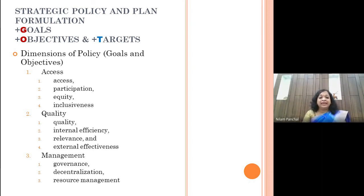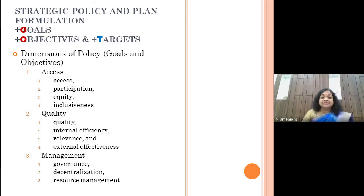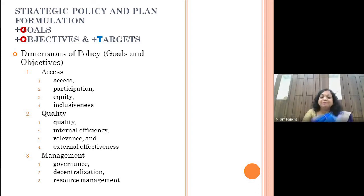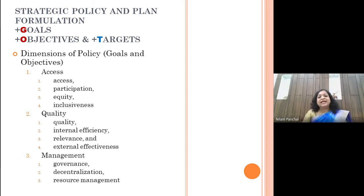So when we are saying strategy, policy and plan formulation, we need to look into these three things. For example, when UGC and HRDC implemented the online orientation program, the first thing they might have done is situation analysis. Secondly, they had to look into access — whether participants and stakeholders would be able to access — whether the lectures being delivered would give quality, and how the overall management of the plan would be done. These are the three important dimensions any organization, sector, or business has to look into.